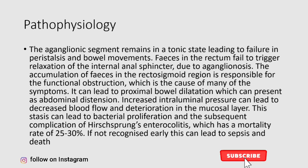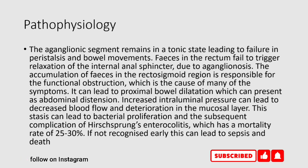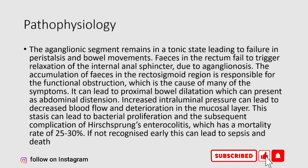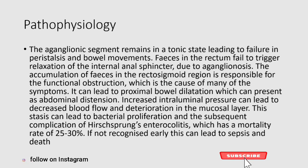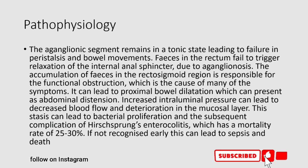This can lead to proximal bowel dilatation, which can present as abdominal distension. Increased intraluminal pressure can lead to decreased blood flow and deterioration in the mucosal layer. This stasis can lead to bacterial proliferation and the subsequent complication of Hirschsprung's enterocolitis, which has a mortality rate of 25 to 30 percent. If not recognized early, this can lead to sepsis and death.